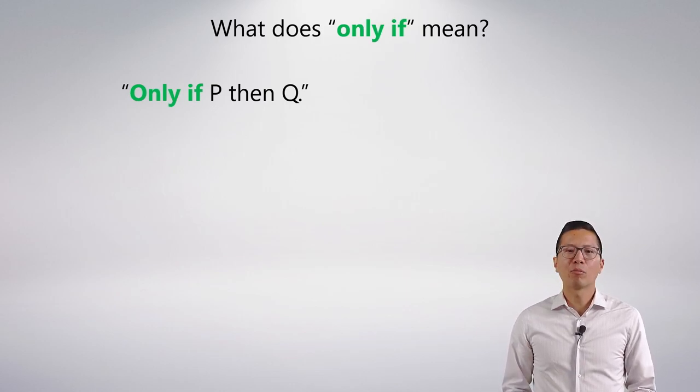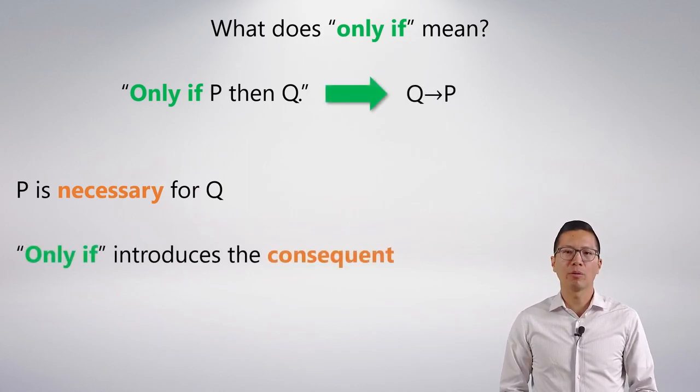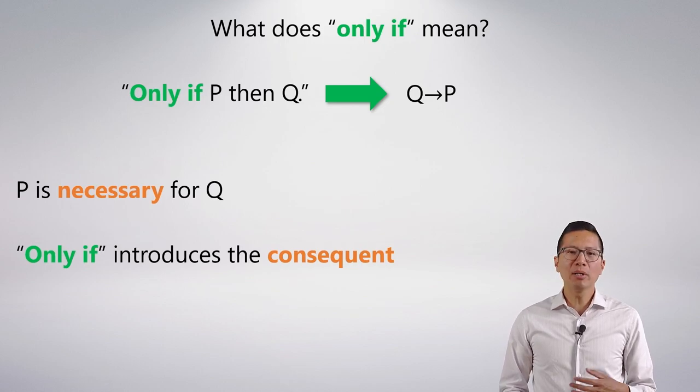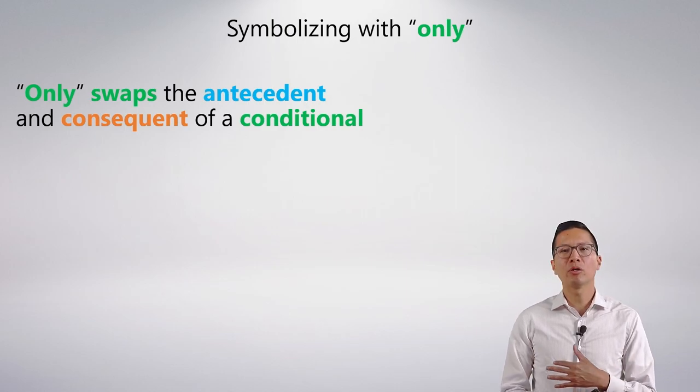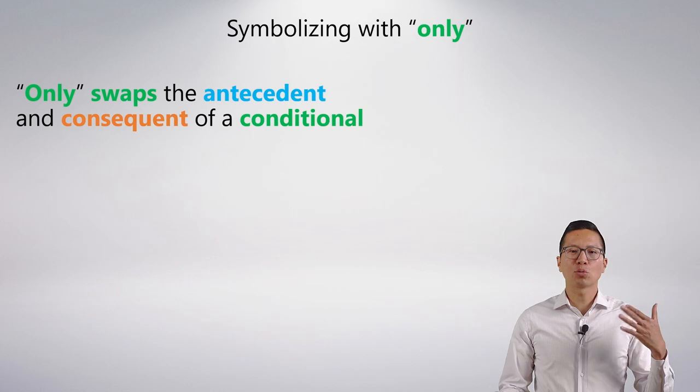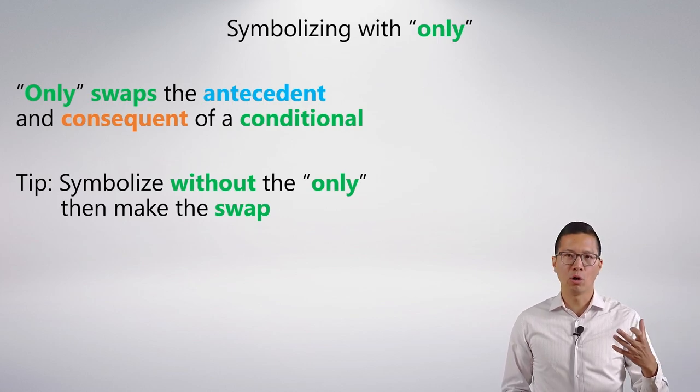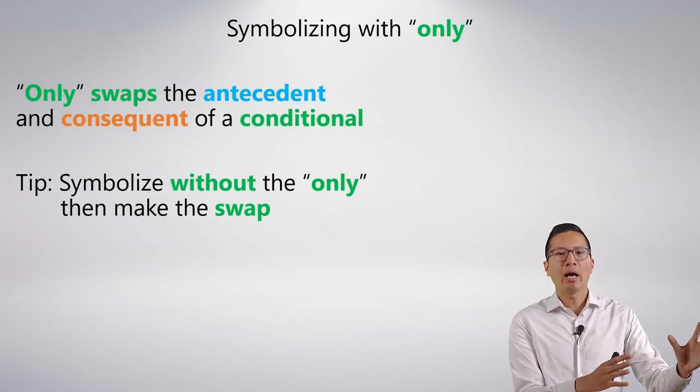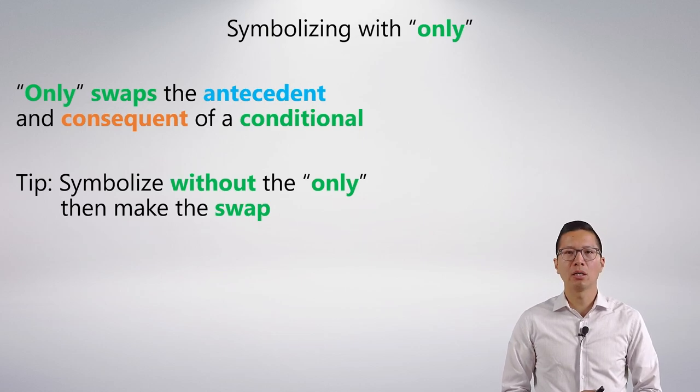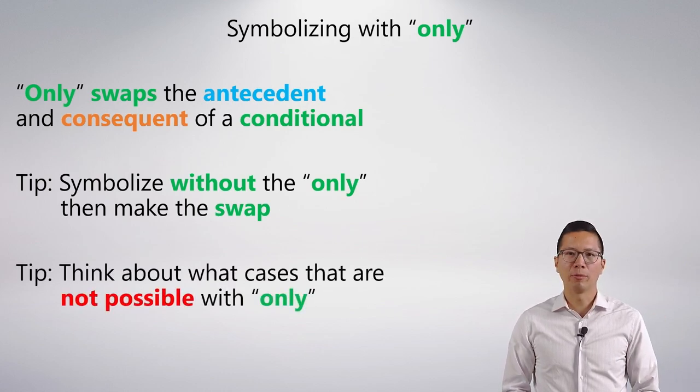What does only if mean? Well, if I say only if P then Q, what I'm really saying is that P is necessary for Q. And we know that a necessary condition has to be in the consequent. So you can say that only if really introduces the consequent of the conditional. That is one way of remembering it. Now symbolizing with only can be done in a variety of different ways. So here's another way of thinking about what only does. And we illustrated this in our first example. You can think that the word only is swapping the antecedent and consequent of a conditional. So the way we would do this is we would actually symbolize without the word only. And we would see what that conditional symbolization is. And then to symbolize with the word only, we actually swap the antecedent and the consequent because that's what only is doing. Of course, the other tip is just to think of the cases that are not possible. And we looked at that as well. So here are some important things to remember when you're symbolizing statements with the word only in it.